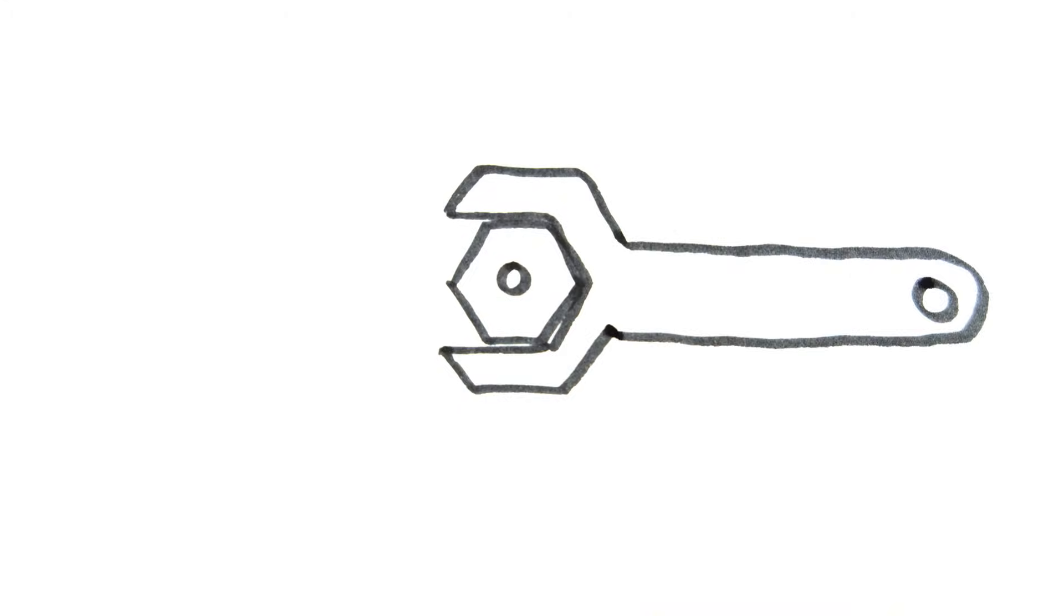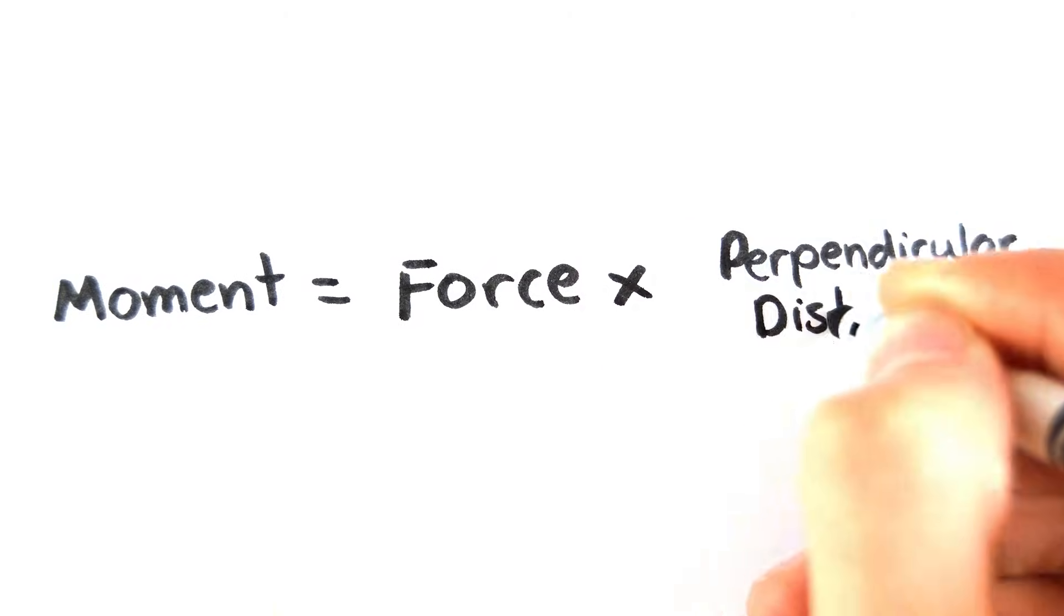A moment is a turning effect of a force. It's calculated by multiplying the force by the perpendicular distance between the force and the pivot.